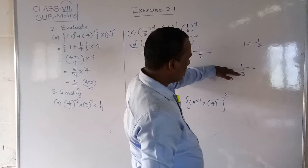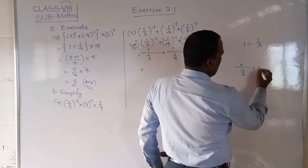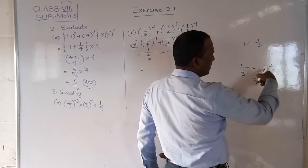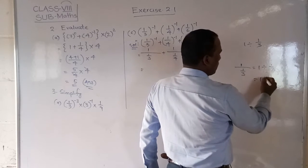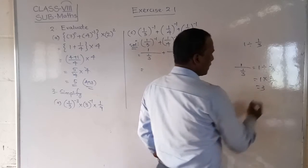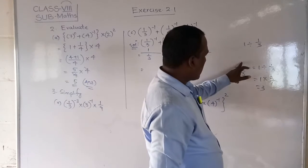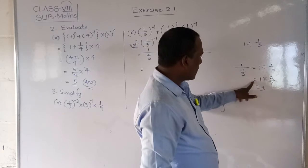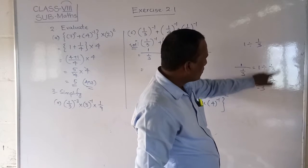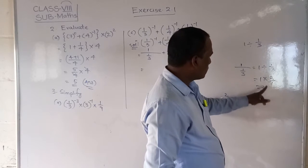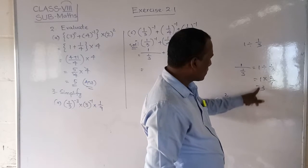1 by 1 by 3 is equal to—that means 1 divided by 1 by 3. Already we know, division means its reciprocal. So 1 into 3 by 1 is equal to 3. Are you clear? 1 by, by means division, 1 by 3 is equal to 1 into reciprocal, 3 by 1. 3 by 1 is 3. It will come answer to 3.